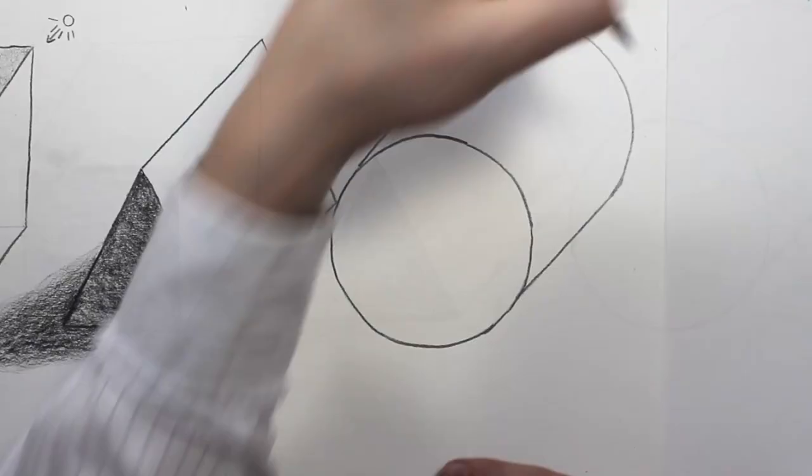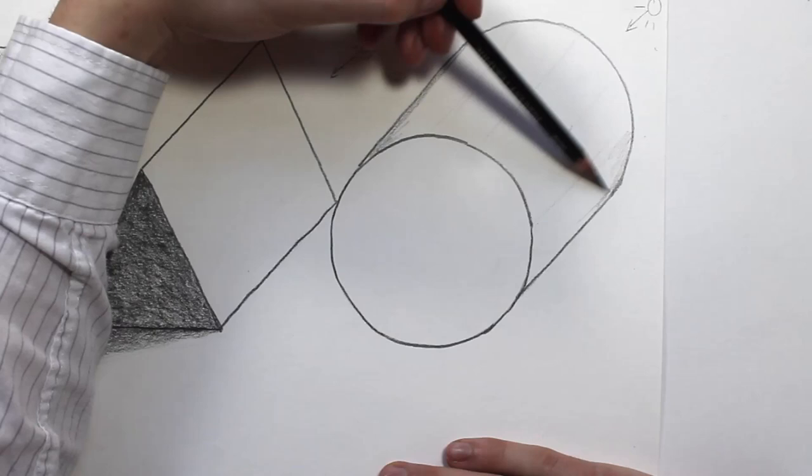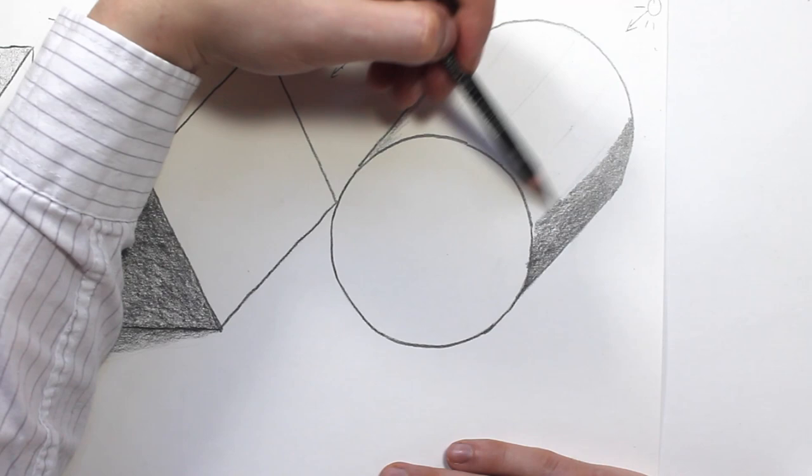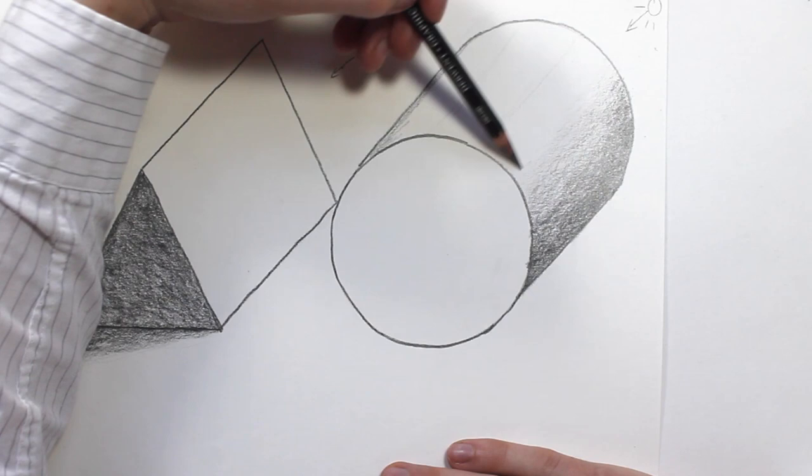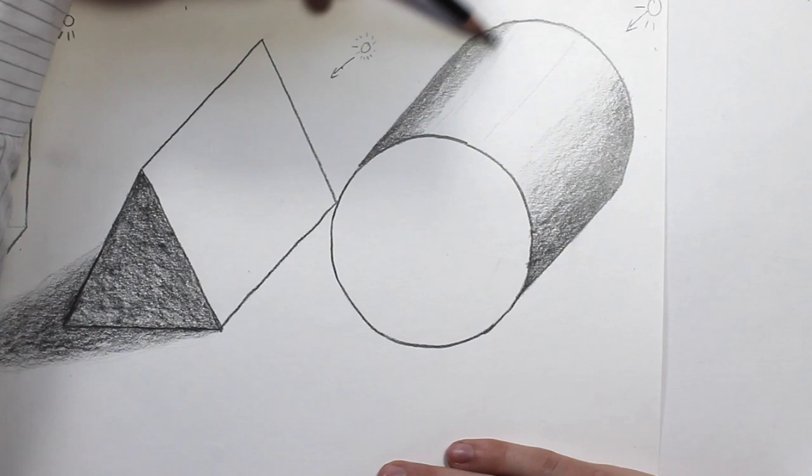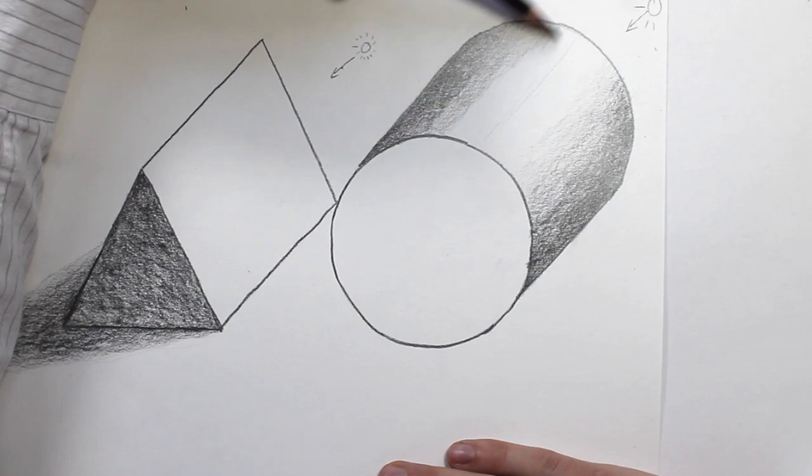Unlike forms with flat edges, curved surfaces require a different approach. Rather than sudden and distinct changes in tone, we make gradual changes from light to dark. This is why choosing your light source is so important. So along the sides of this cylinder, where it is curved, the areas that are closer to that light source will be lighter and the areas further away will gradually become darker and darker.